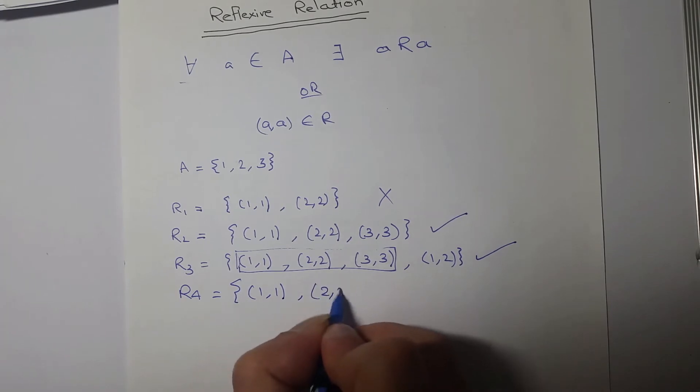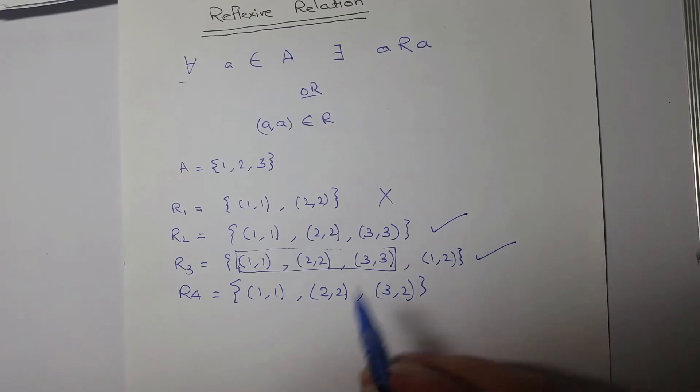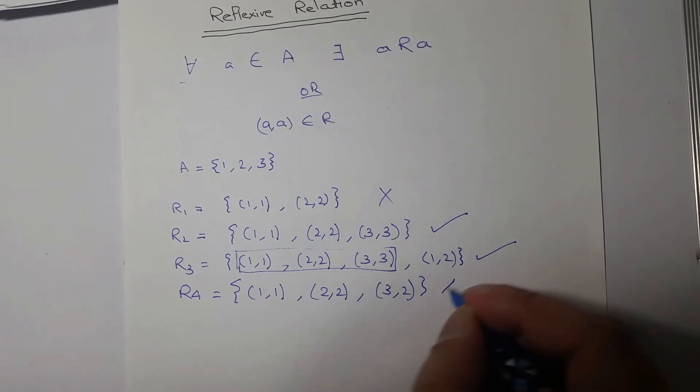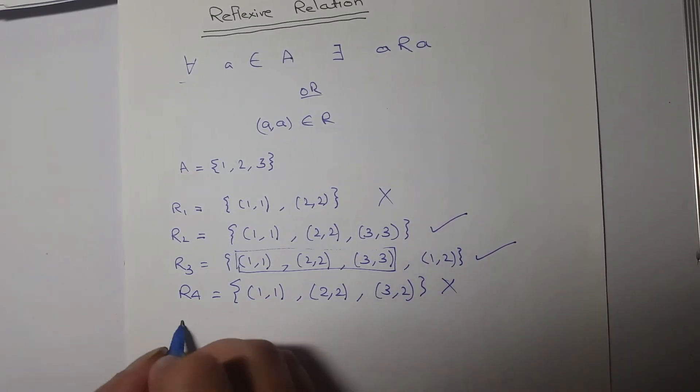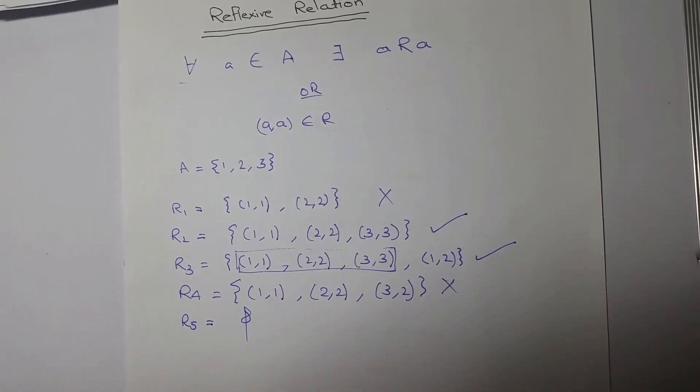Now here again, 3 is not related to 3, so this is not a reflexive relation. Next example, R5 is the empty set. This is not a reflexive relation because every element is not related, so there is no (1,1), (2,2), (3,3).